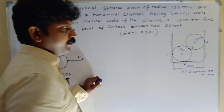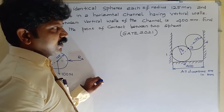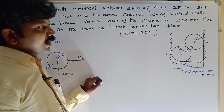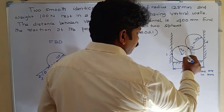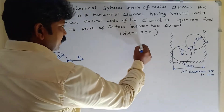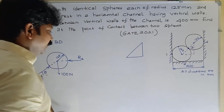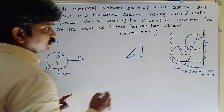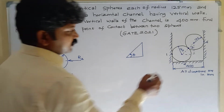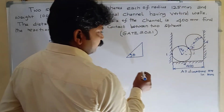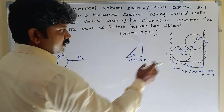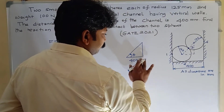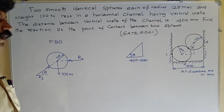At the contact point, join the center points of the two spheres. The line joining the centers passes through contact point three. Now draw a vertical line and a horizontal line, forming a right angle triangle. From this right angle triangle, find the inclination theta of reaction R3. The radius of each sphere is 125 mm, so the horizontal distance is 400 minus 125 minus 125, which equals 400 minus 250 = 150 mm.